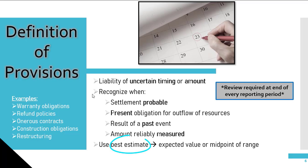A provision is measured using the best estimate. In the case where there is a large possibility of outcomes, it's estimated using the expected value method. When there is a range of possible outcomes and each point is just as likely as the other, the midpoint of the range will be used. Under IFRS, a provision is required to be reviewed at the end of every reporting period.